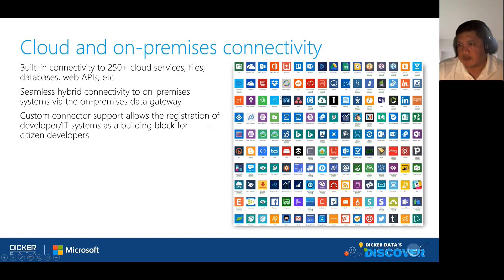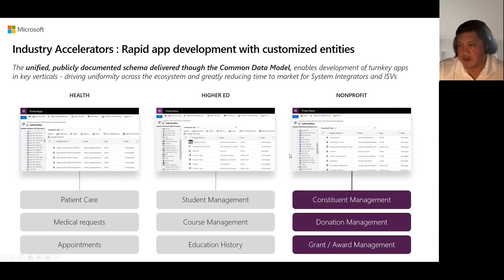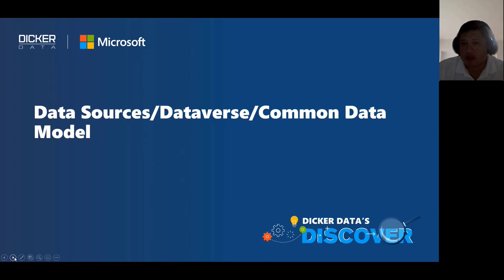There are over 250 pre-built connectors available on the platform to connect various types of data, whether cloud or on-premise. You also have industry accelerators — if you're working in a specific industry requiring specific functionality, such as the not-for-profit industry, there's an industry template that builds on top of the database platform to manage constituents, donations, and grants and awards, storing that information centrally and integrating with your other applications.